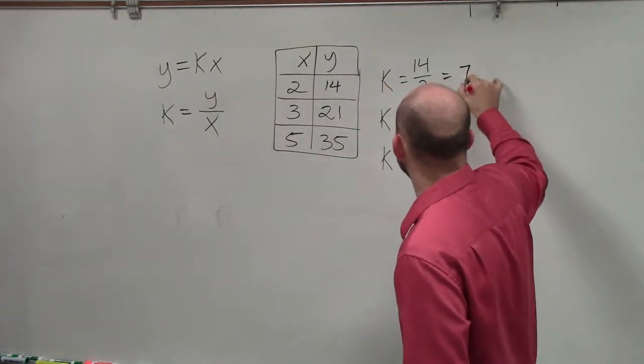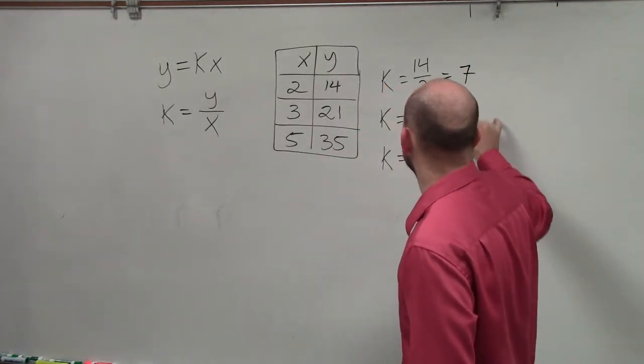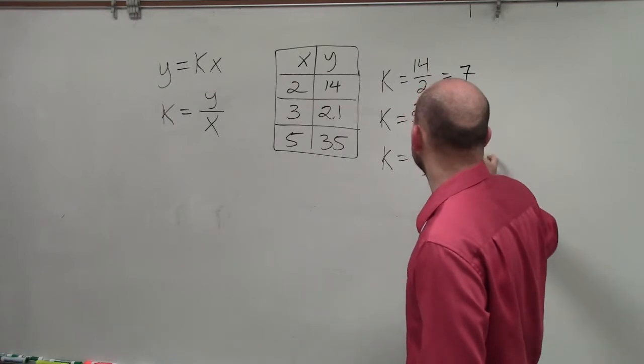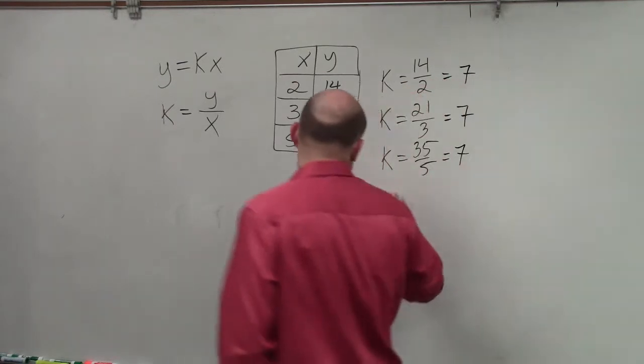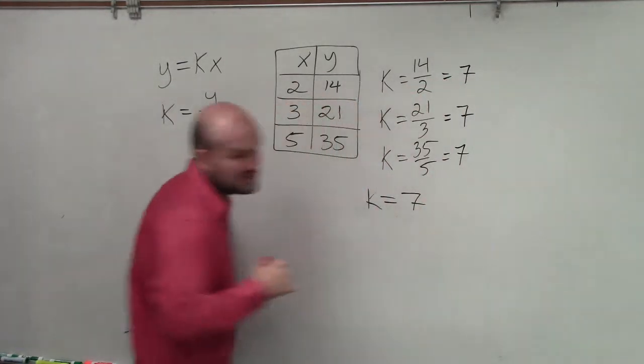So 14 divided by 2 is 7. 21 divided by 3 is 7. 35 divided by 5 is 7. So that means k is equal to 7.